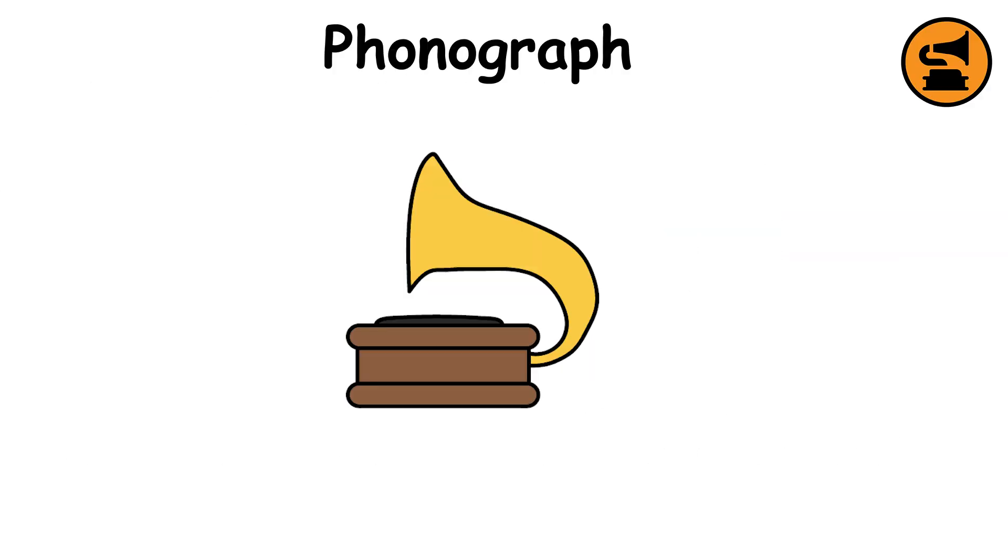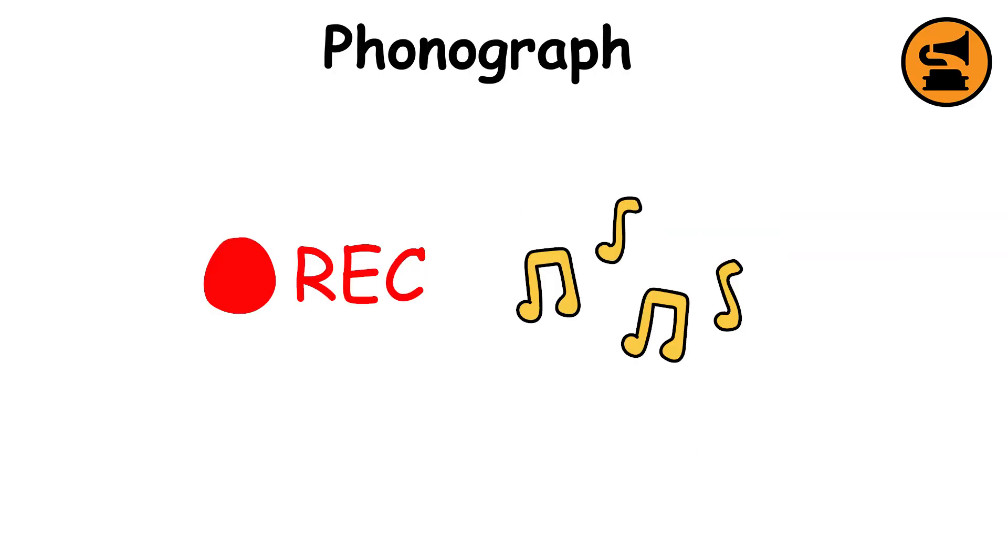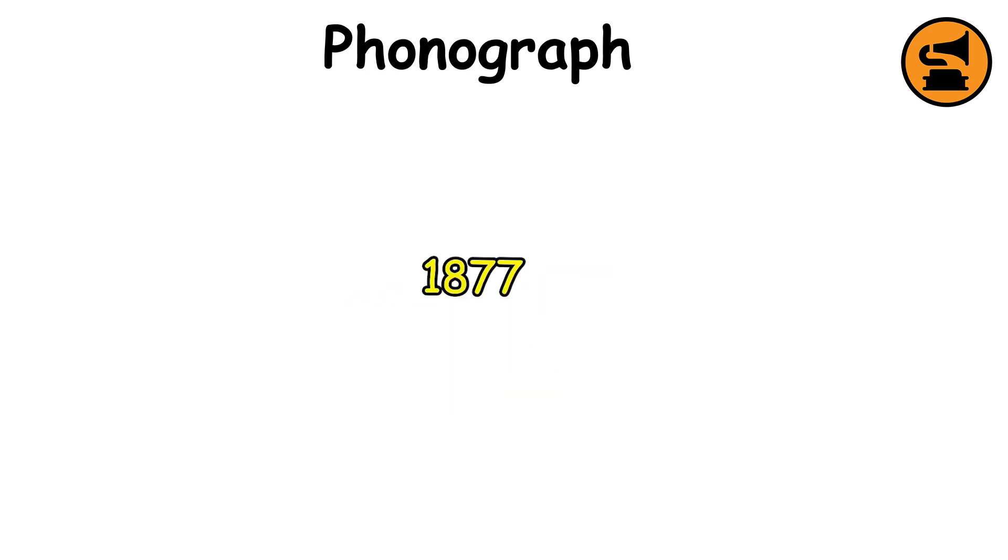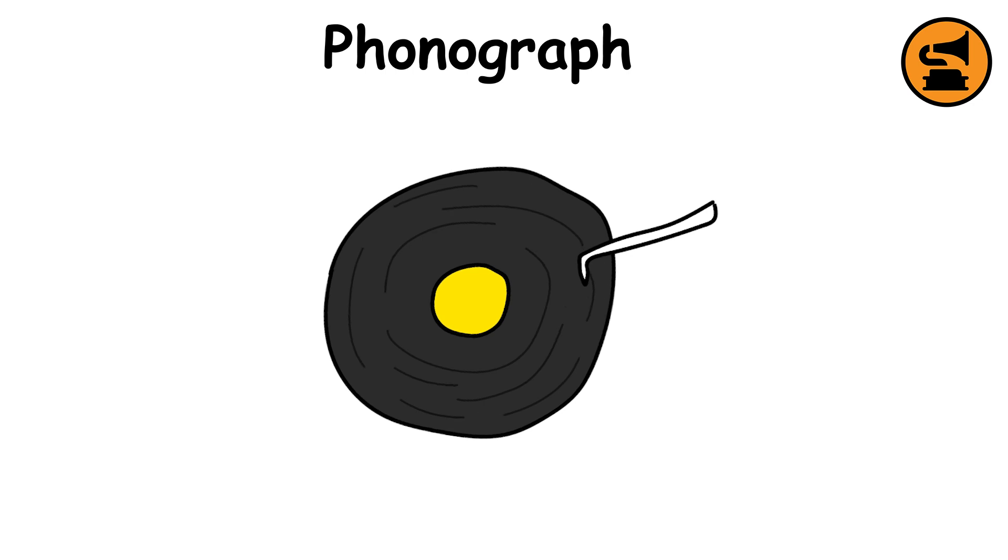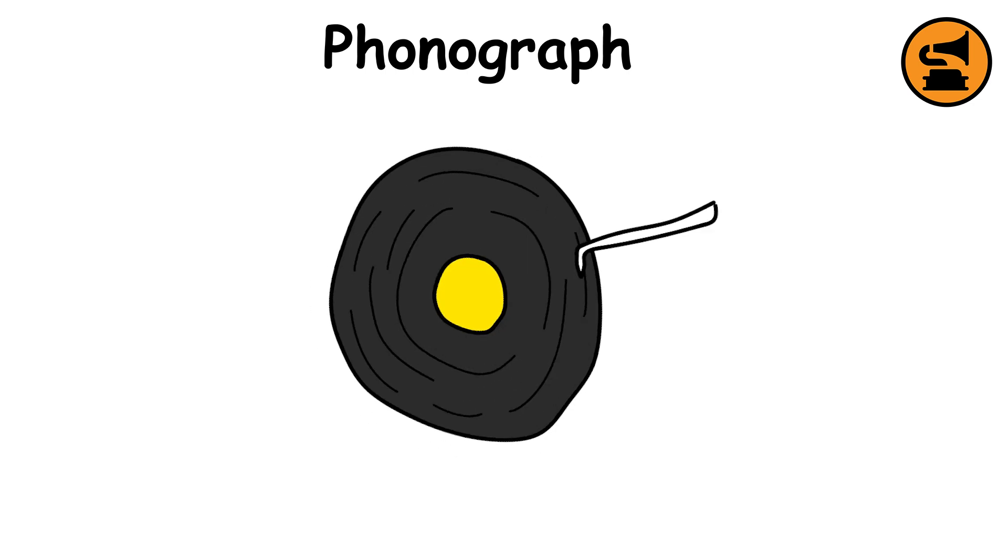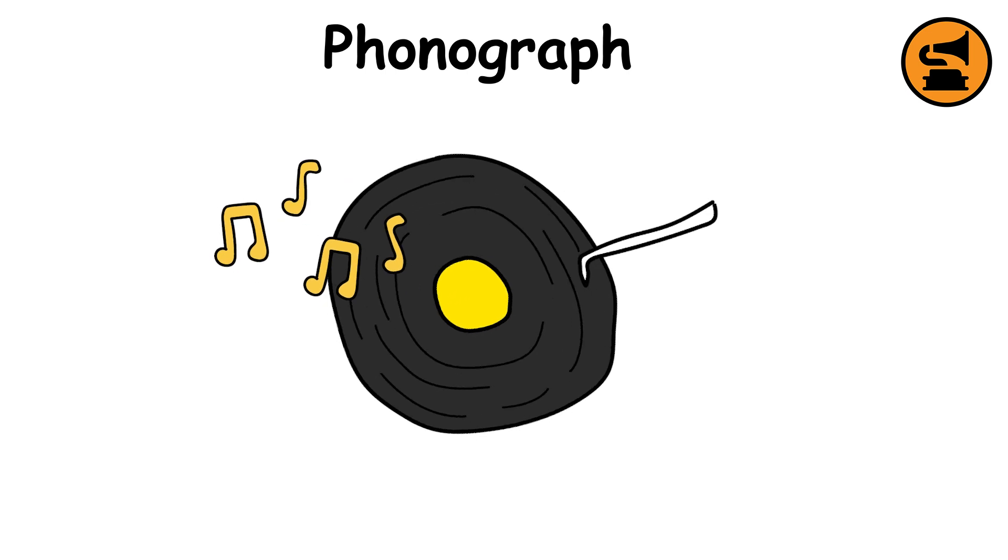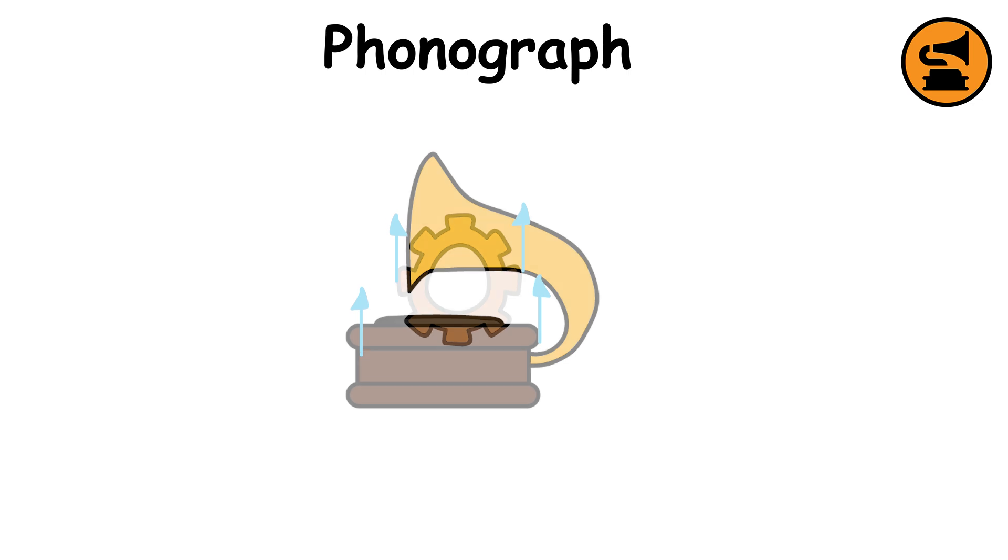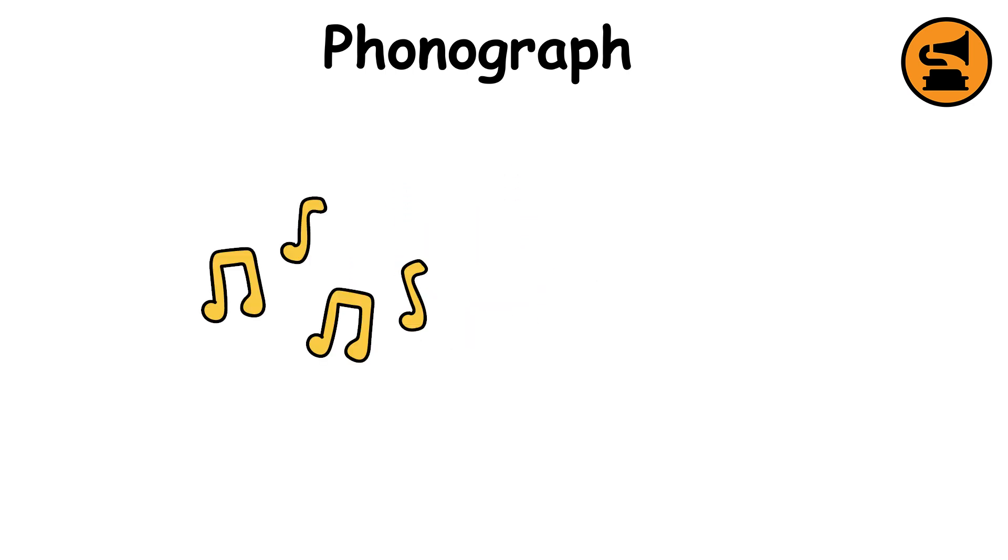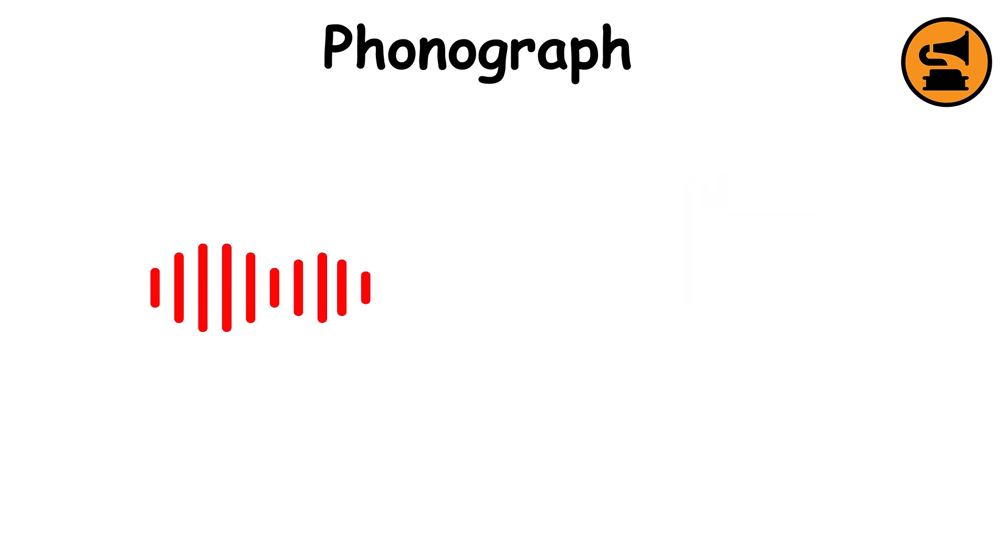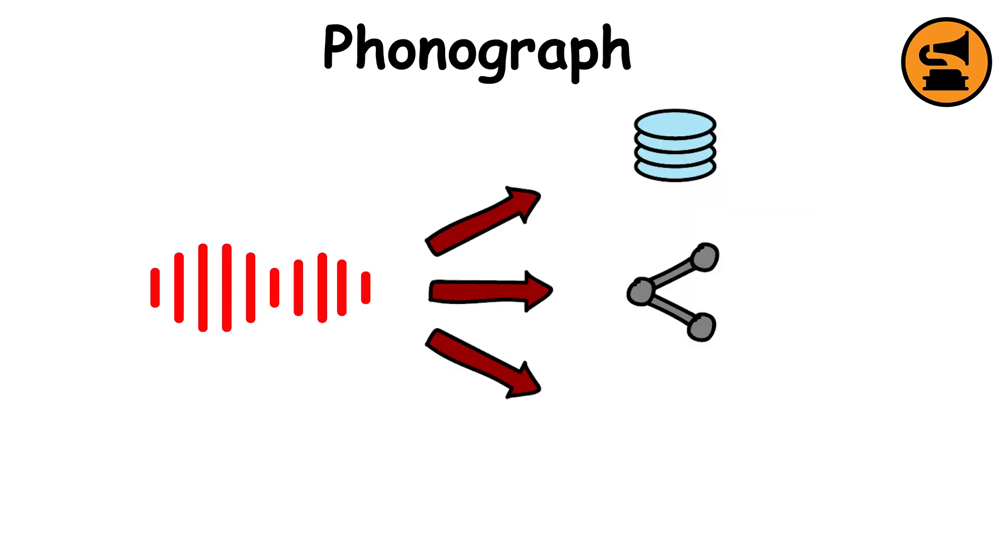Phonograph. The phonograph was the first device capable of recording and reproducing sound. Invented by Thomas Edison in 1877, it worked by etching sound vibrations onto a rotating cylinder wrapped in tin foil. When played back, a needle traced those grooves and recreated the recorded sound. Edison's early recordings were simple voices and short messages, but the invention quickly evolved into a tool for music and entertainment. The phonograph paved the way for record players, radio, and the entire modern music industry, making sound something that could be stored, shared, and replayed.